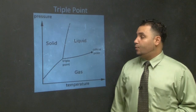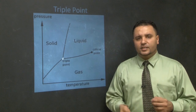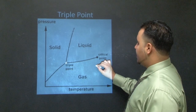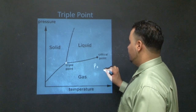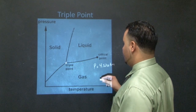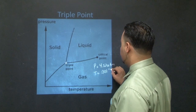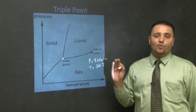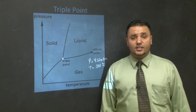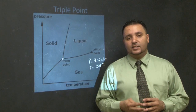The triple point is the specific temperature and pressure at which solid, liquid, and gas all exist simultaneously. For water, this occurs at 0.01 degrees Celsius and 4.57 millimeters of mercury pressure. This ends lecture two on gas laws and phases of matter. Make sure you're taking the practice tests seriously and reserving about an hour a day for SAT II chemistry study.